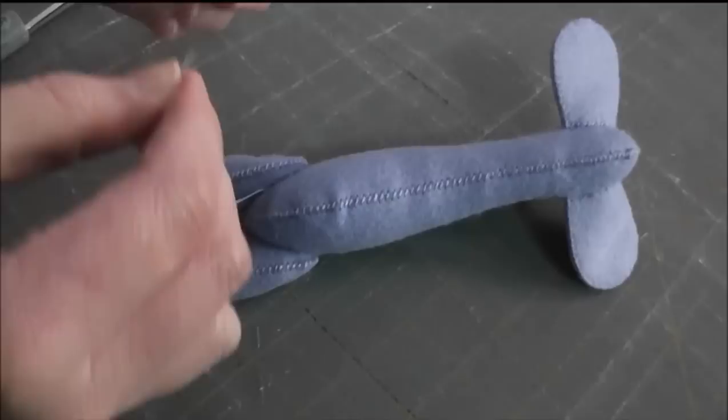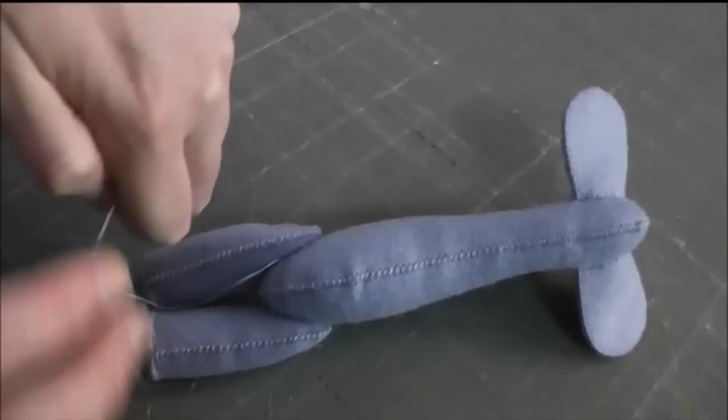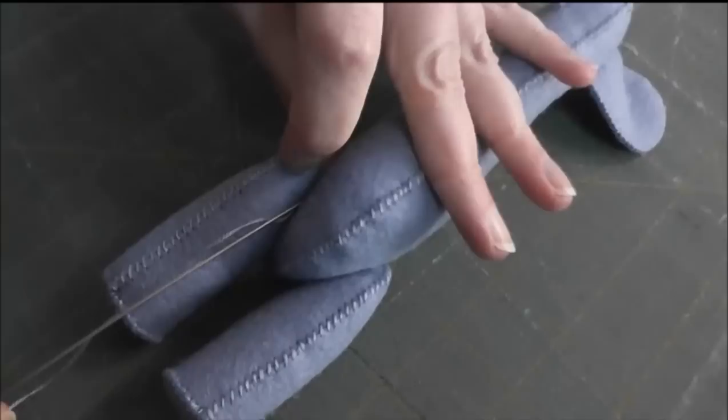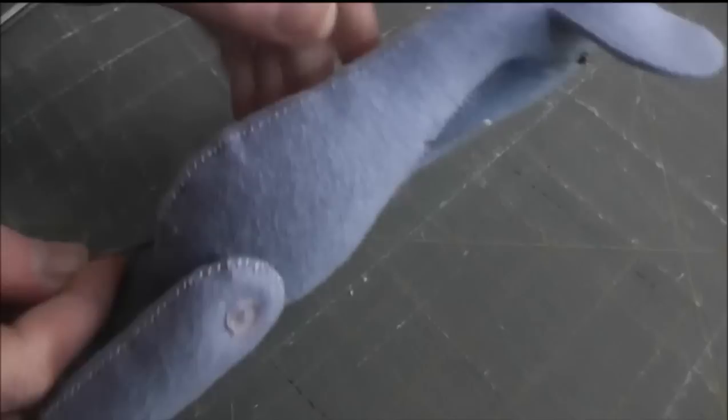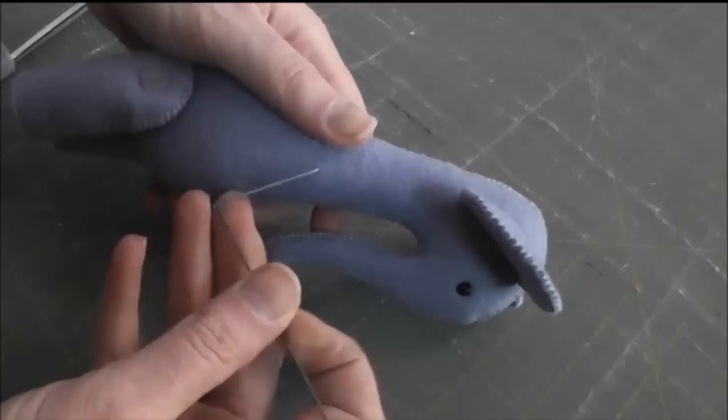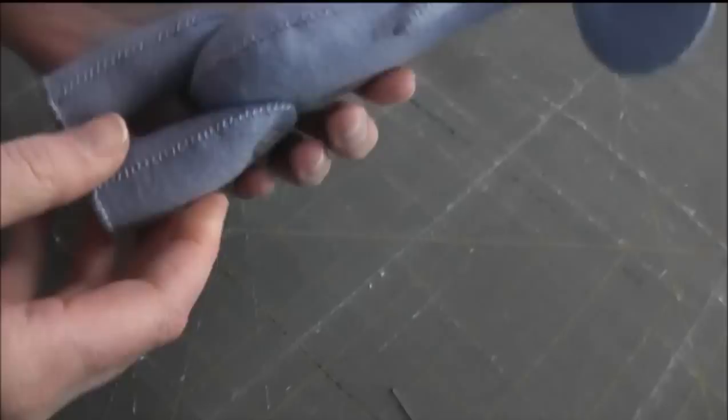And then just need to do the same thing with this other tail, but I'll have to thread it. So you just thread your tail and do the same exact thing. Go into the body right near where the knot is. Come out anywhere. Pull it up so there's a little tension on it, snip it, and that thread tail disappears.